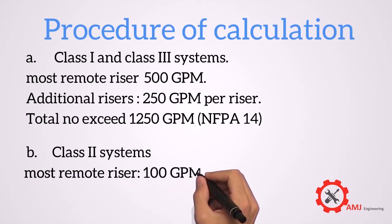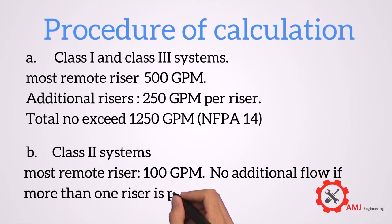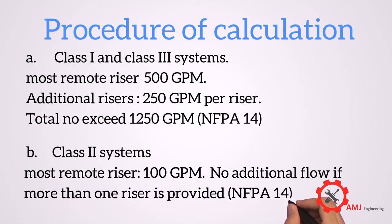For class 2 systems, the minimum flow rate for hydraulically most remote riser shall be 100 GPM. Additional flow needs not to be added when more than one riser is provided.